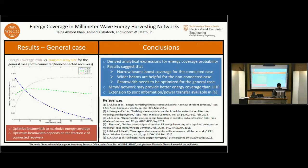In the next plot, we considered the case where the network has both connected and non-connected receivers. The epsilon parameter is the fraction of connected receivers in the network. Here, we see an interesting result that the energy coverage probability can be optimized over the transmit antenna beamwidth.